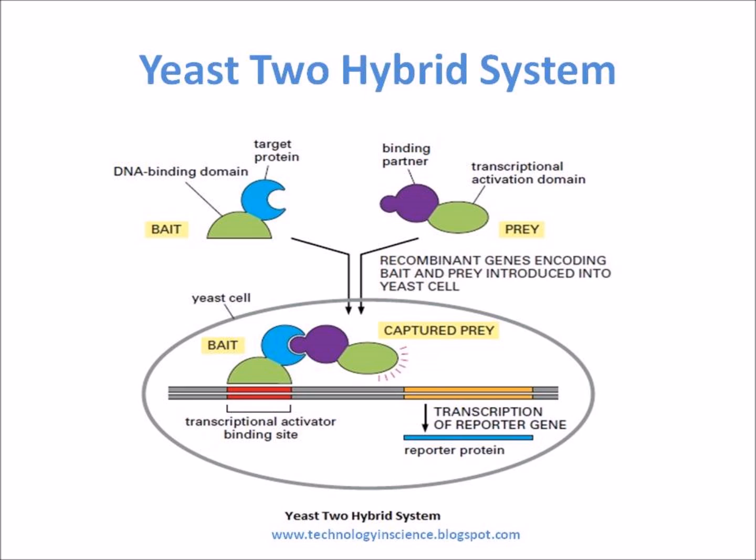This is how the Yeast-2 Hybrid System works. The DNA sequence that encodes the target protein is fused with the DNA that encodes the DNA binding domain of a gene activator protein using recombinant DNA technology. Two sets of proteins are used: the bait protein and the prey protein. The target protein fused to a DNA binding domain localizes it to the regulatory region of a reporter gene, known as bait.